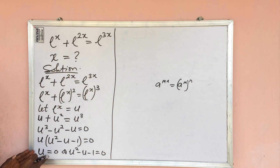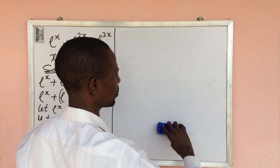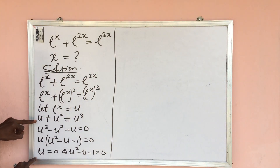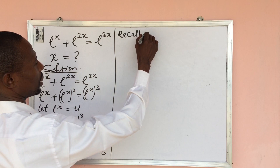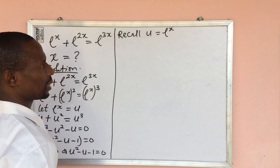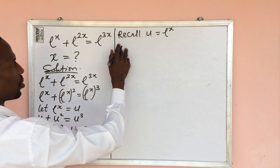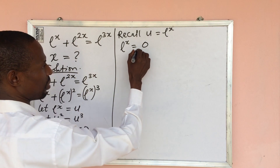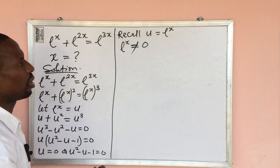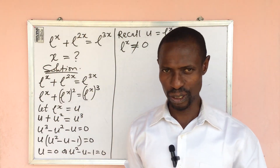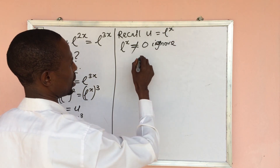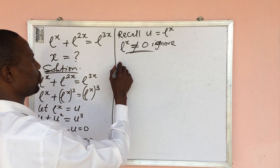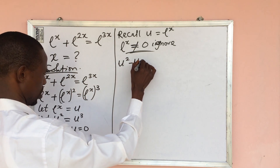Let's handle the first solution. Recall we said u equals e to the power of x. So u equal to zero gives us e to the power of x equal to zero. But e to the power of x cannot equal zero, so we automatically discard and ignore this solution.